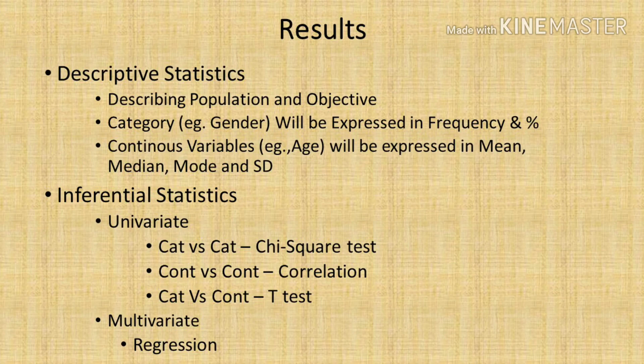After describing our population and objectives, we move on to inferential statistics, where we infer something from the data. We use association tests. When it is category versus category — for example, male versus female, or urban area versus rural area — we use the chi-square test. There are assumptions for it which we must follow.